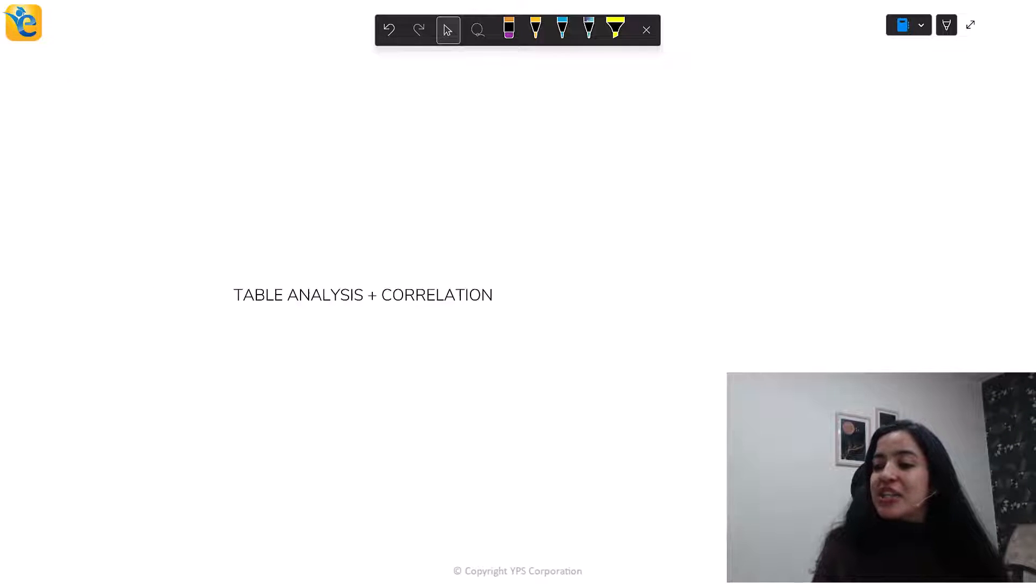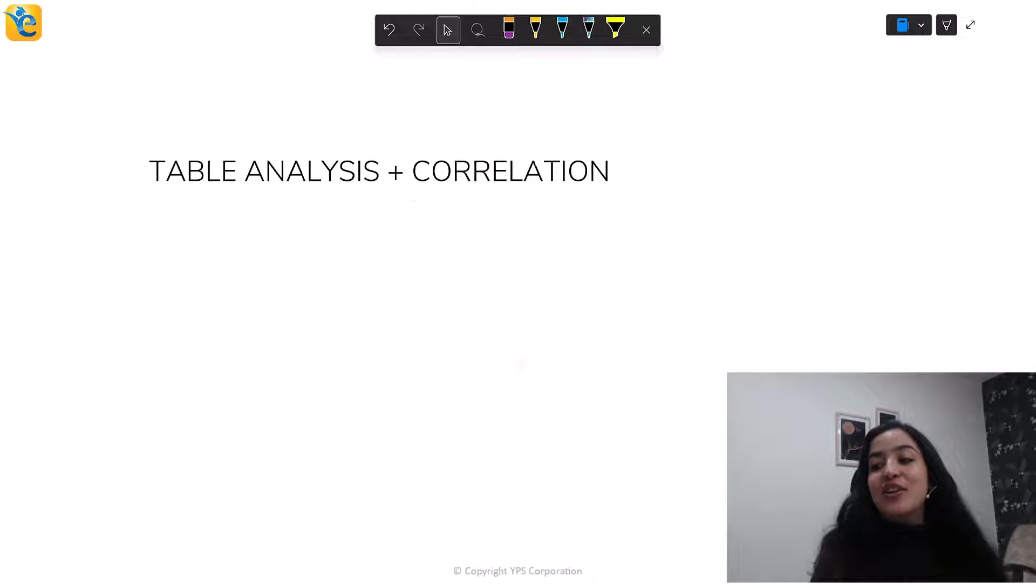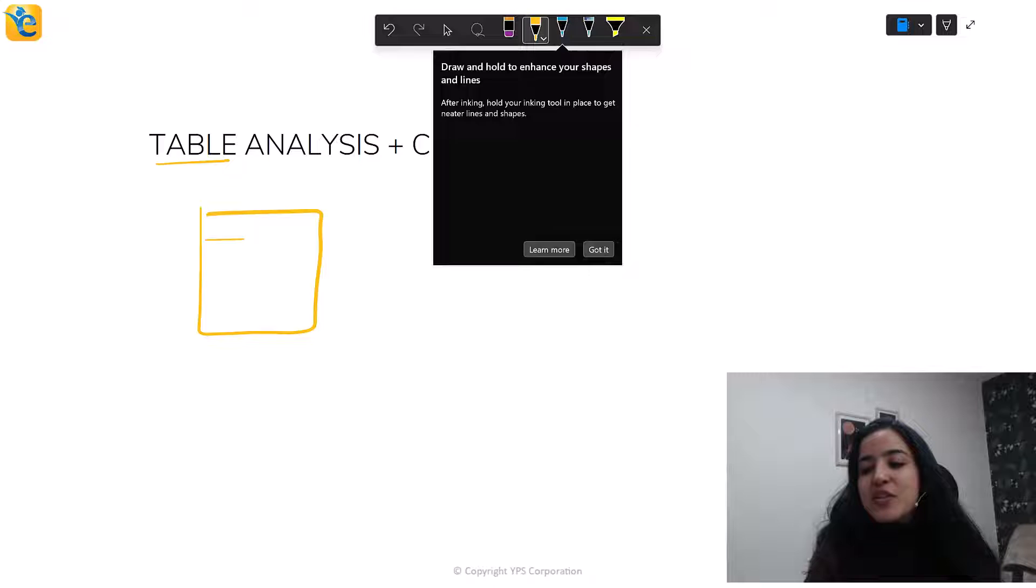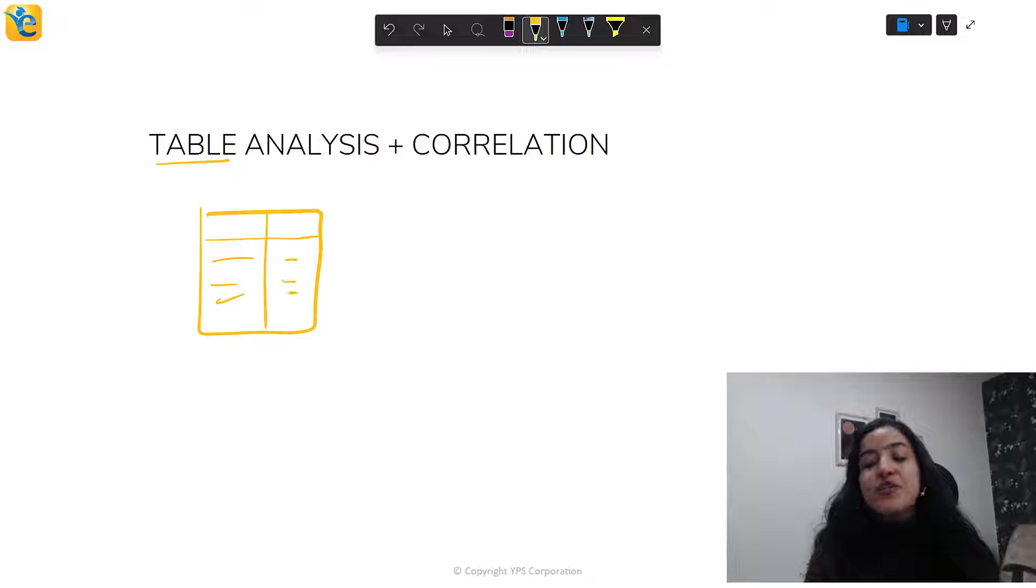We will now see the connection: table analysis and correlation together. These questions present an interesting challenge because of their nature. As the name tells you, table analysis - these are questions where all the data is presented in the form of a table. The question then becomes, how do we infer correlation from tables? We already saw how that's very clearly seen on a line graph. Is it going up? Is it going down?